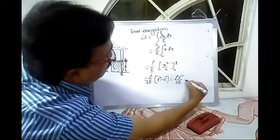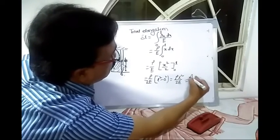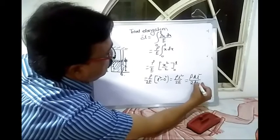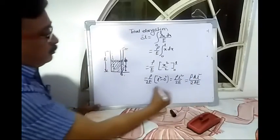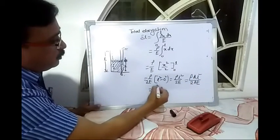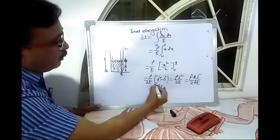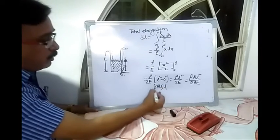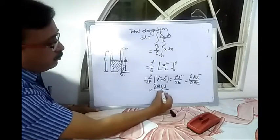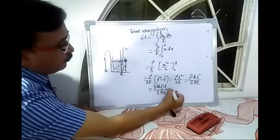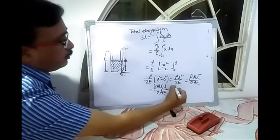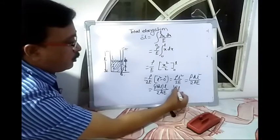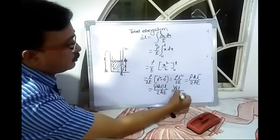If we multiply the numerator by A and the denominator also by A, we get: rho A L is the total weight of the body, times L, divided by 2AE. So rho A L, which equals W, the total weight of the body, times L, divided by 2AE.